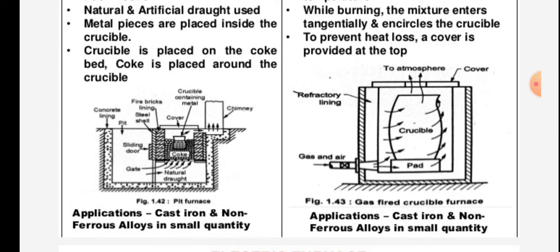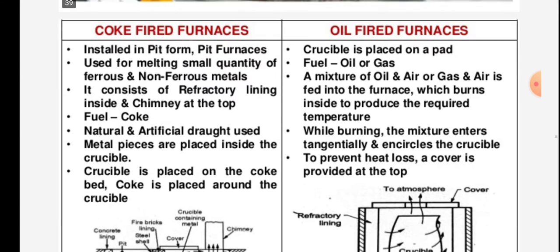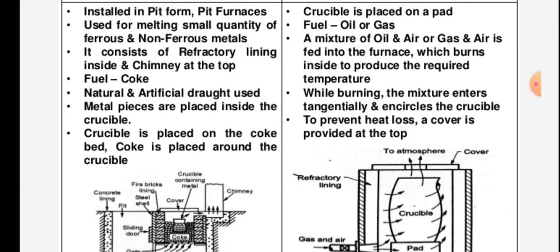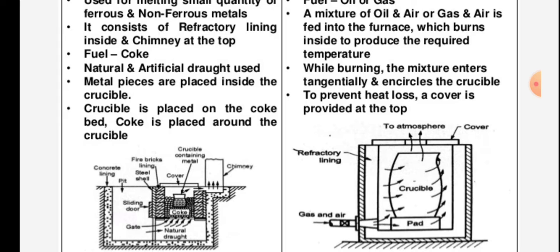Applications of the pit furnace include cast iron and non-ferrous alloys in small quantities. For oil fired furnaces, the crucible is placed on a pad, and the fuel is oil or gas. A mixture of oil and air, or gas and air, is fed into the furnace, which burns inside to produce the required temperature. While burning, the mixture enters tangentially and encircles the crucible. To prevent heat loss, a cover is provided at the top.